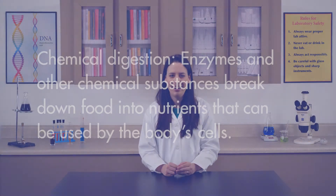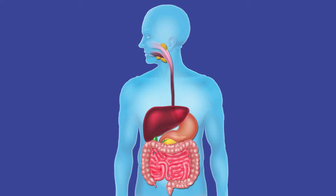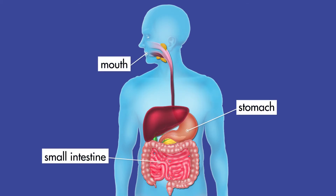These digestive enzymes begin the work of chemical digestion. In chemical digestion, enzymes and other chemical substances break down food into nutrients that can be used by the body's cells. Chemical digestion takes place in the mouth, stomach, and small intestine.